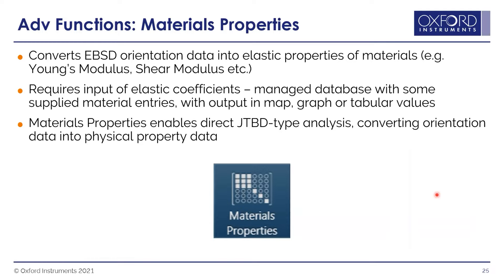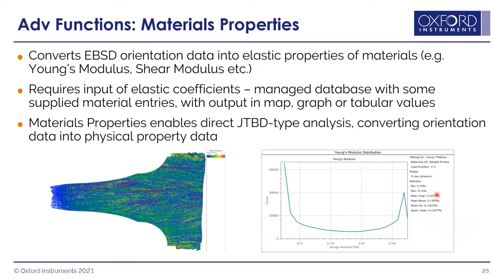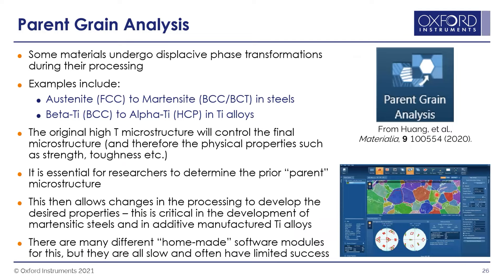Also, material properties: if we have orientation information, all we really need to know is the elastic properties of the materials in tensor form. If we input that, we can create maps that mimic the elastic property — things like Young's modulus, shear modulus, Poisson's ratio. It's another tool to create a map, and you can see the histogram of the example.